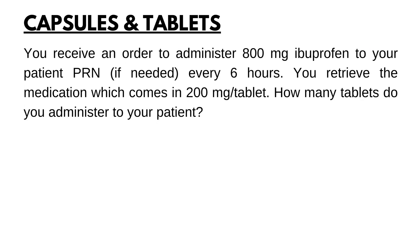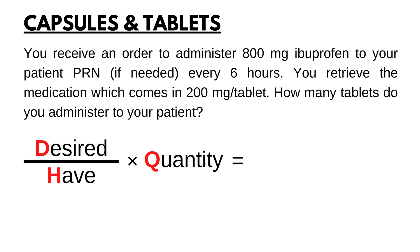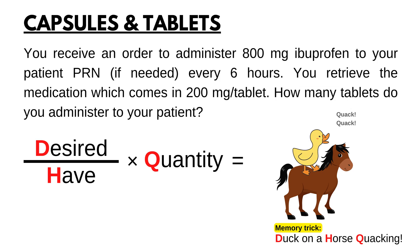You receive an order to administer 800 mg ibuprofen to your patient PRN every 6 hours. You retrieve the medication, which comes in 200 mg per tablet. How many tablets do you administer to your patient? The first step is to set up our formula: desired over half times quantity. Use the memory trick to remember it — duck on a horse quacking. Now, add the unit answer: tablets, because the question is asking how many tablets do you administer to your patient?